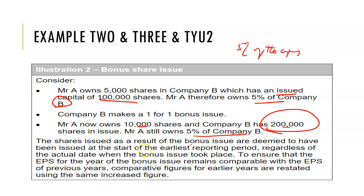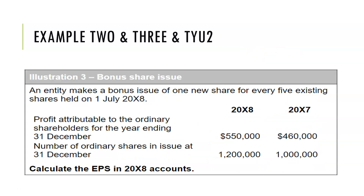The bonus issue is treated as issued at the start of the earliest accounting period, regardless of the actual date it took place. This is really to enable comparability. Let's look at an example where a bonus issue is happening.